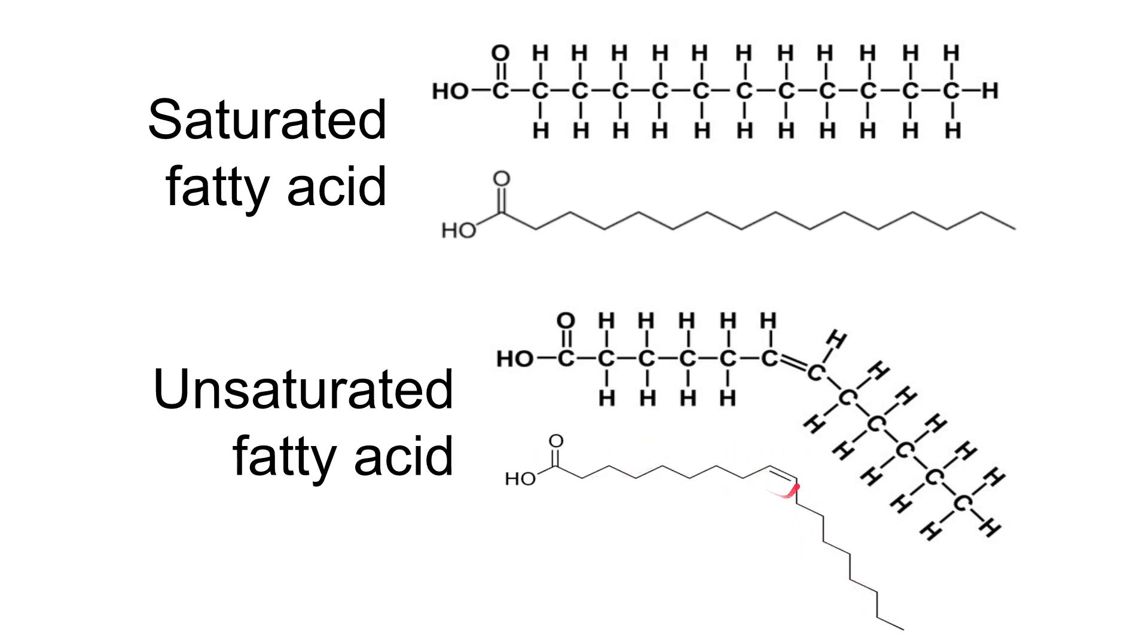Where you see this simplified structure, the kink is present, and where you have the double bond, you have this additional line. You need to be able to describe the differences: saturated means no double bonds, saturated with hydrogen; unsaturated means one or more double bonds and is unsaturated with hydrogen.